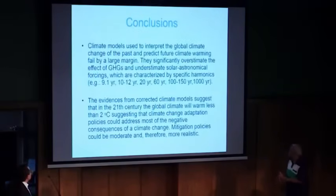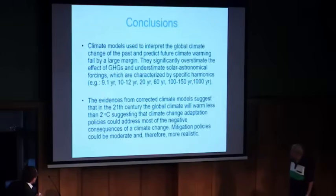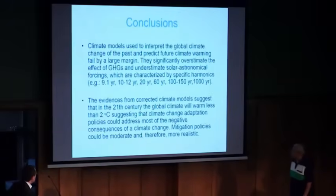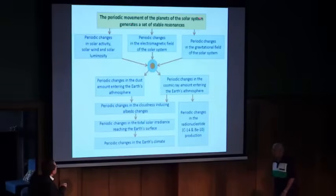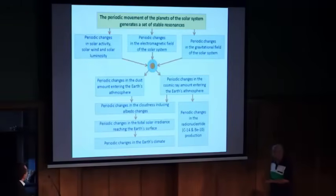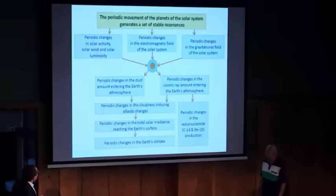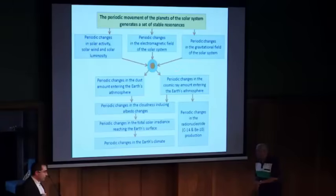In conclusion: the climate has important oscillations. These oscillations are characterized by specific harmonics which are linked to planetary harmonics. The temperature will be kept below a 2-degree warming, so there might be just some adaptation policy to apply. The periodic movement of the planets of the solar system generates a set of stable resonances well known to geophysicists and solar physicists. These resonances produce oscillations in the solar wind, which then create oscillations in cosmic rays, in interplanetary dust density, and this creates climate change oscillations.